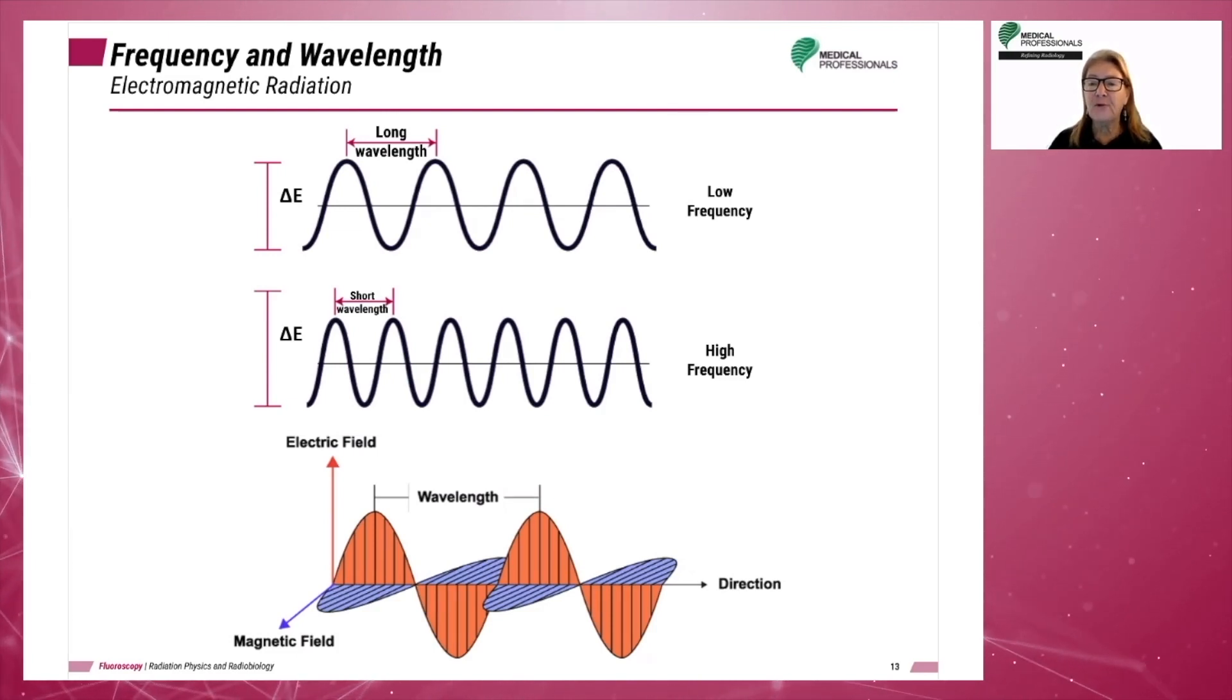As the frequency increases, the waves occur closer together or more frequently. Wavelength is defined as the distance from one wave peak to the next. As wavelength increases, the peaks get further apart. Note the relationship between the two.